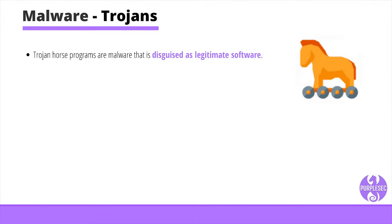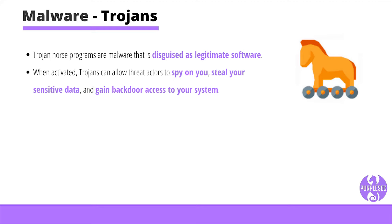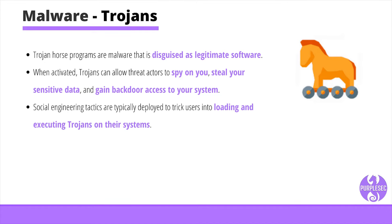Trojan horse programs are malware disguised as legitimate software. A trojan horse program will hide on your computer until it's called upon. When activated, trojans can allow threat actors to spy on you, steal your sensitive data, and gain backdoor access to your system. Trojans are commonly downloaded through email attachments, website downloads, and instant messages. Social engineering tactics are typically deployed to trick users into loading and executing trojans on their systems. Unlike computer viruses and worms, trojans are not able to self-replicate.